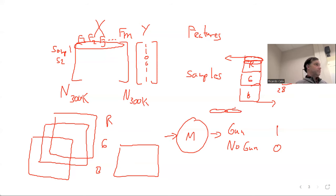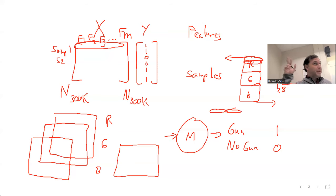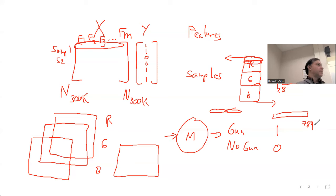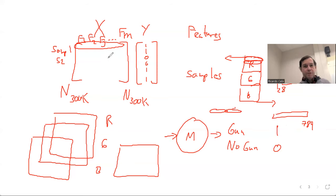Let's summarize where we are. X is 300,000 by M, where M is 3 times 784. Y is 300,000 by 1, containing zeros and ones. Features are F1 through FM - every pixel. Samples are images - 300,000 of them. The images are 28 by 28, spaghettified to 784, and then stacked three times for RGB. Every pixel is a feature, so every sample's F3 corresponds to pixel 3 in the R channel.